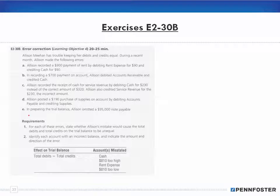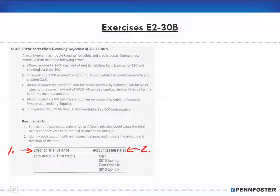Number one asks: for each of these errors, state whether Allison's mistake would cause the total debits and total credits on the trial balance to be unequal — that's the effect on the trial balance. Number two asks: identify each account with an incorrect balance and indicate the amount and direction of the error.